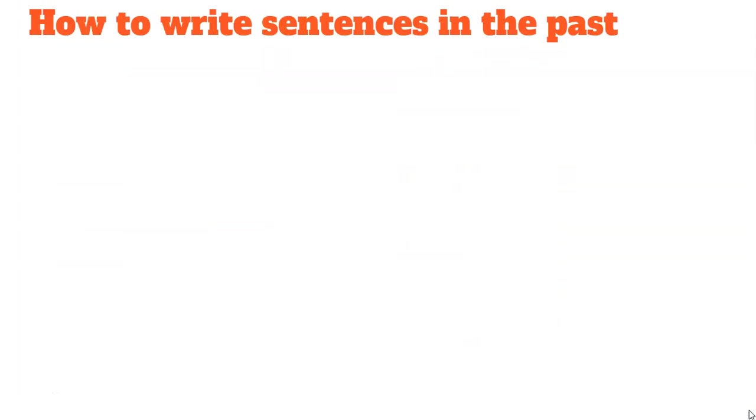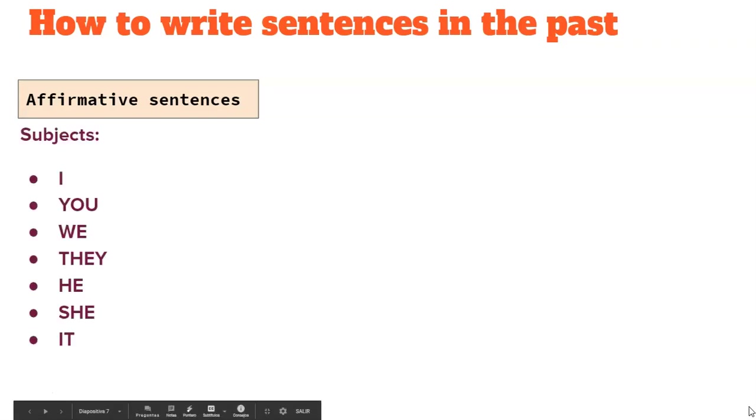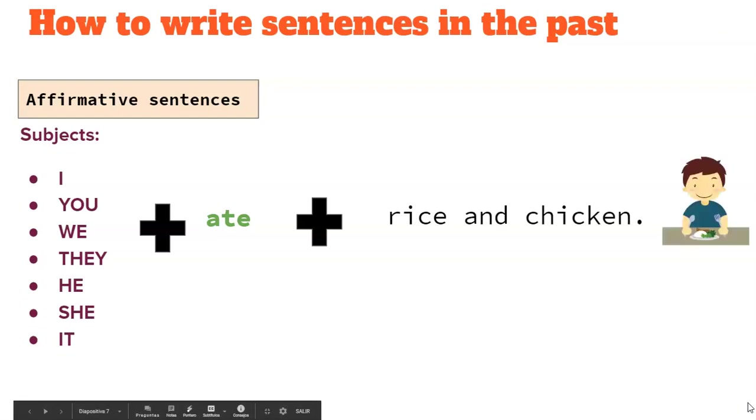How to write sentences in the past? Pay a lot of attention in this part. First, affirmative sentences. Our subjects - here we have some pronouns that represent the subject in a sentence. If to the pronoun we add a verb in the past, like ate, that is the past tense of eat, plus some extra information, rice and chicken, we get a sentence in the past. Let's see another example.